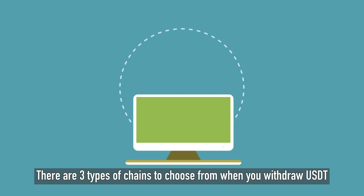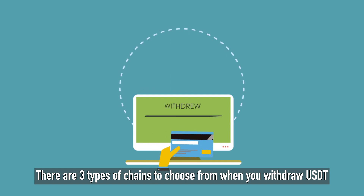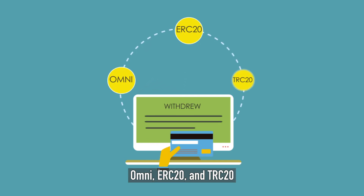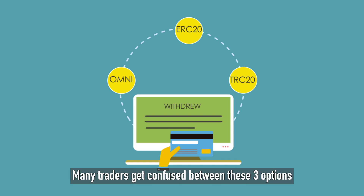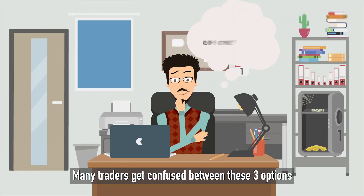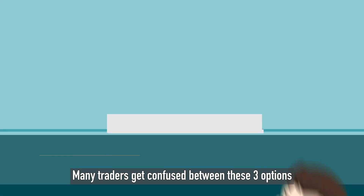There are three types of chains to choose from when you withdraw USDT: Omni, ERC-20, and TRC-20. Many traders get confused between these three options.